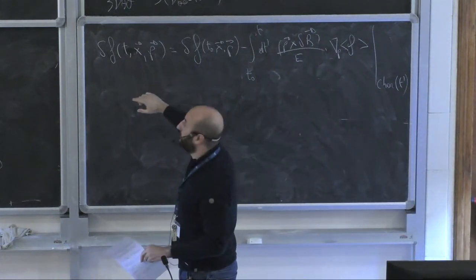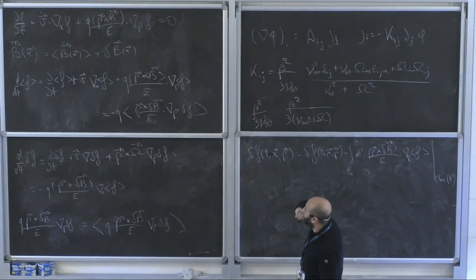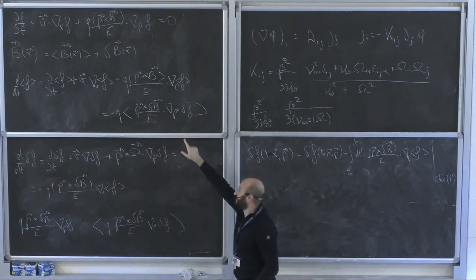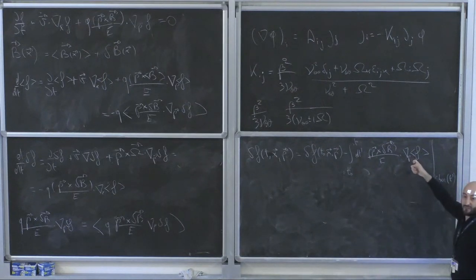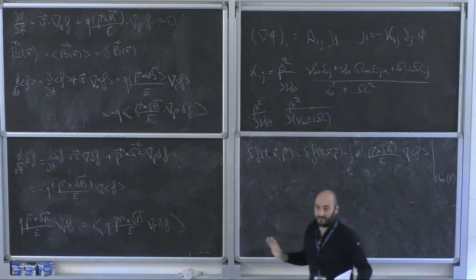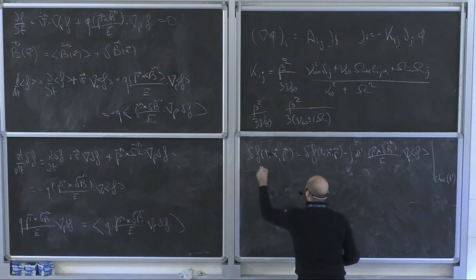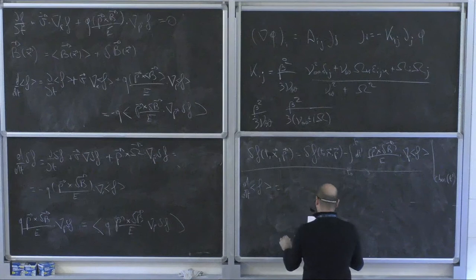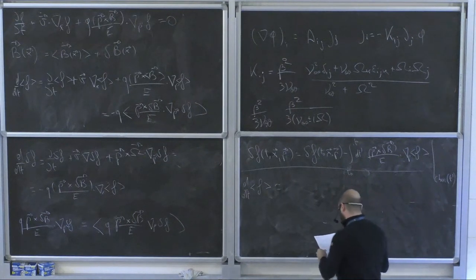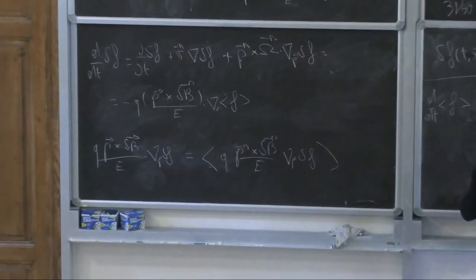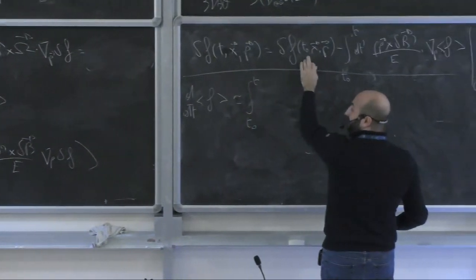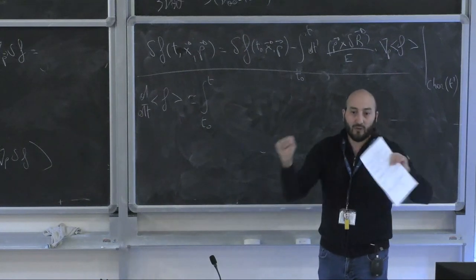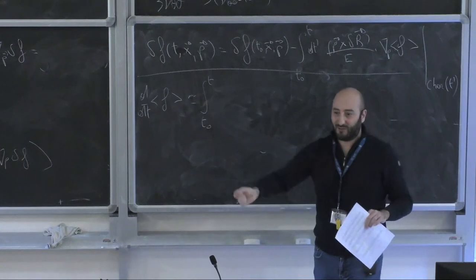Once we have δf expressed in terms of ⟨f⟩, we can plug it back into the equation for ⟨f⟩, giving a closed equation for ⟨f⟩. After ensemble averaging and assuming initial fluctuations are uncorrelated with field fluctuations — so that piece averages to zero — the remaining term gives: ∂⟨f⟩/∂t ≈ integral of q² (p × δB/E)·∇_p [(p × δB/E)·∇_p ⟨f⟩] evaluated along characteristics. This is quadratic in the field fluctuations, has two momentum derivatives, and has all the features of a diffusion operator — this is quasi-linear theory.